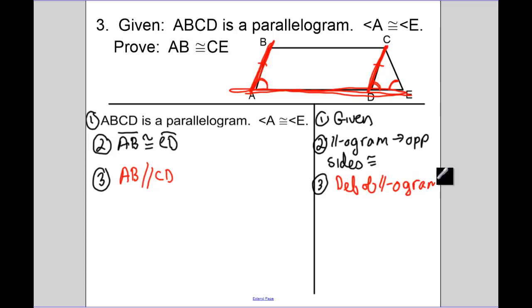Now, because that is true, because of definition of a parallelogram, then I can say that angle A is congruent to angle CDE. Because, what's that special angle pair? That special angle pair is corresponding. So parallel lines gives us corresponding angles congruent.